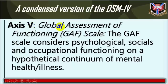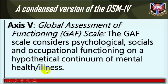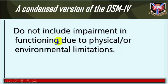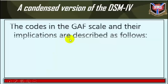Axis 5: Global Assessment of Functioning (GAF) Scale. The GAF scale considers psychological, social, and occupational functioning on a hypothetical continuum of mental health or illness. Impairments in functioning due to physical or environmental limitations are not included. The codes in the GAF scale and their implications are described as follows.